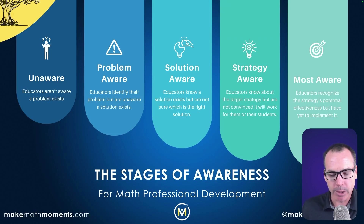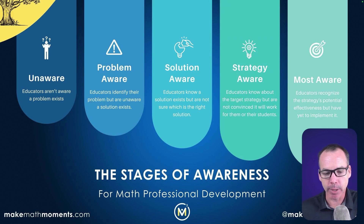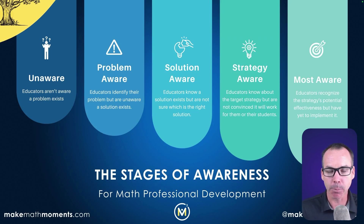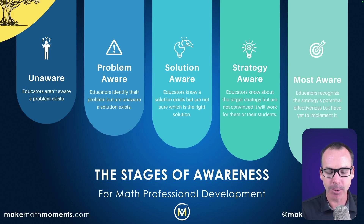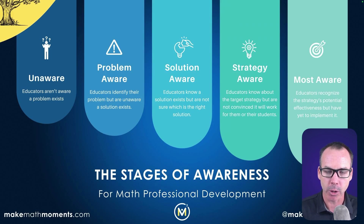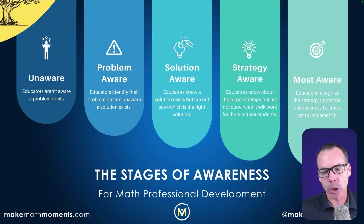When we're trying to help teachers become problem aware, we're trying to help them recognize that there's a problem. Where we're falling short is that in math, we often try to help them with data — logical reasons why this is a problem in your classroom, maybe scores aren't high enough. But we're falling short on helping teachers become problem aware because we haven't addressed the elephant.